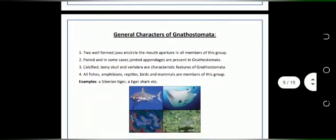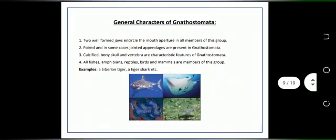Further, we go through general characters of Gnathostomata. They have two well-formed jaws that encircle the mouth aperture in all members of this group. Paired appendages are present but in some cases, jointed appendages are also present. Calcified, bony skull and vertebrae are characteristic features of Gnathostomata.